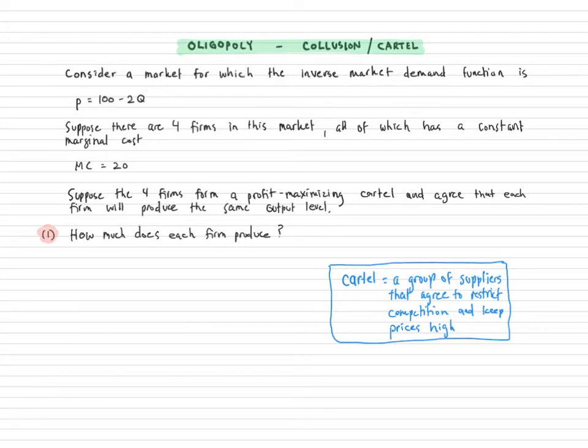So here we want to consider a market that has the inverse market demand function of P equals 100 minus 2Q. There are only a few firms, so this is going to be an oligopoly. So there are four firms in this market and they all are identical in terms of cost structures and their constant marginal cost is equal to 20.